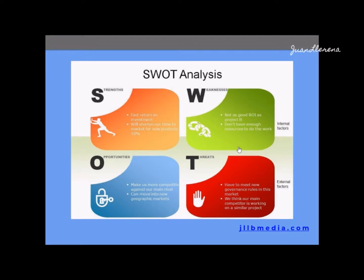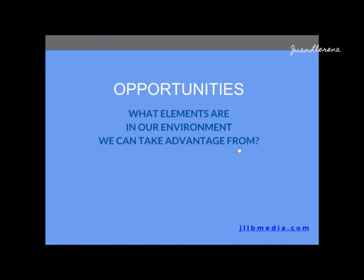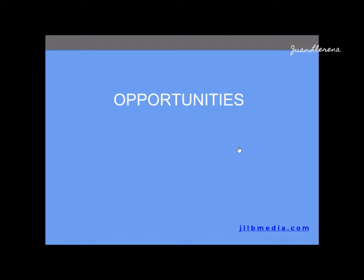Those are the four points for the internal factors — the strengths and weaknesses — the things we can control. Now we're going to cover the other two bottom quadrants: opportunities and threats, which are external factors we usually can't control. For opportunities, we ask: what elements are in our environment that we can take advantage of?